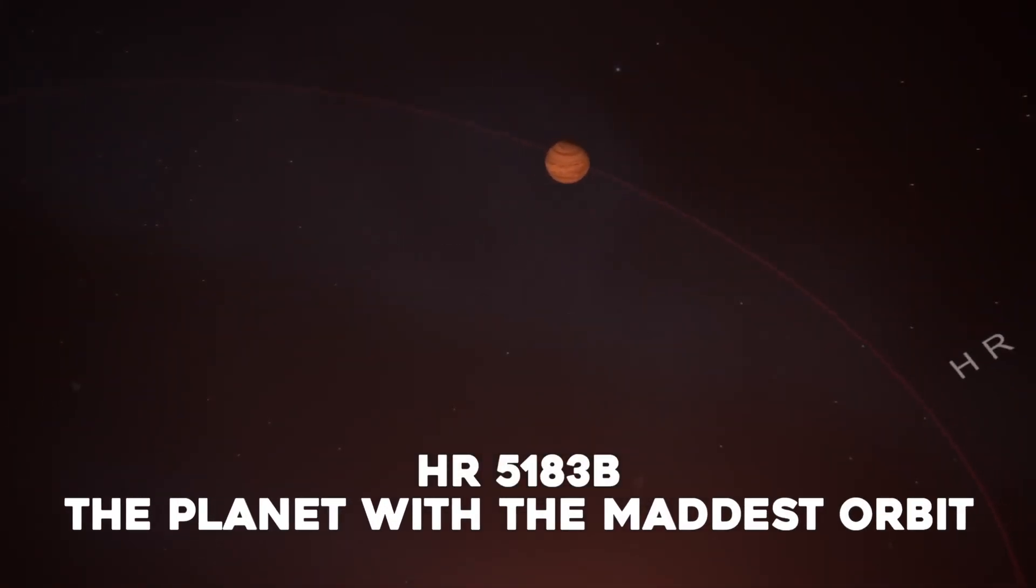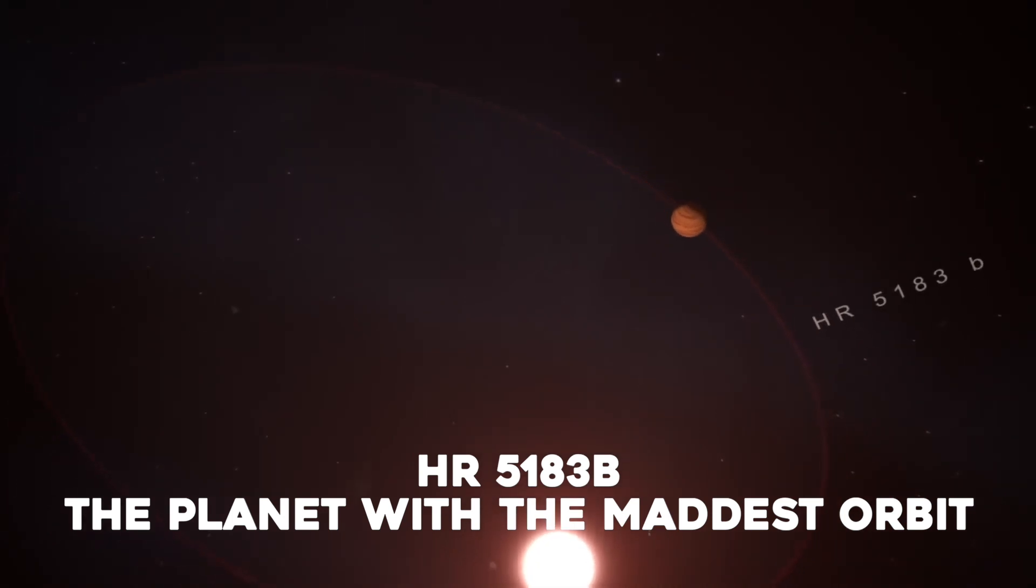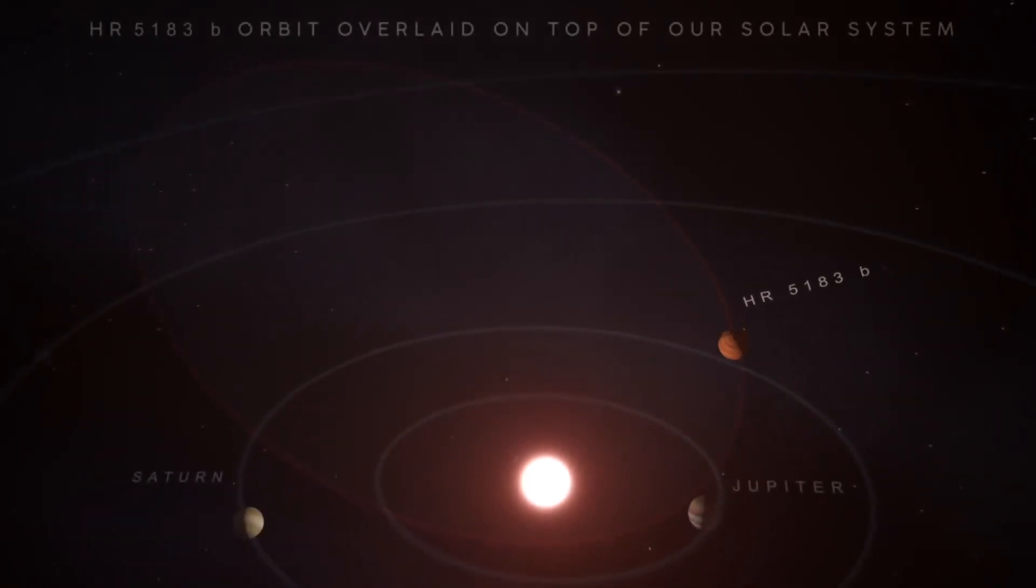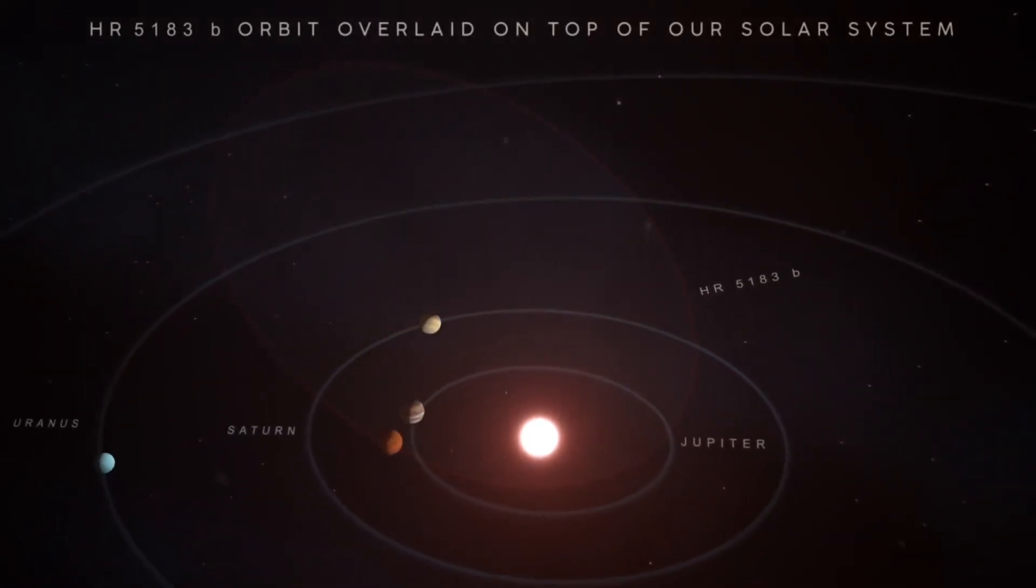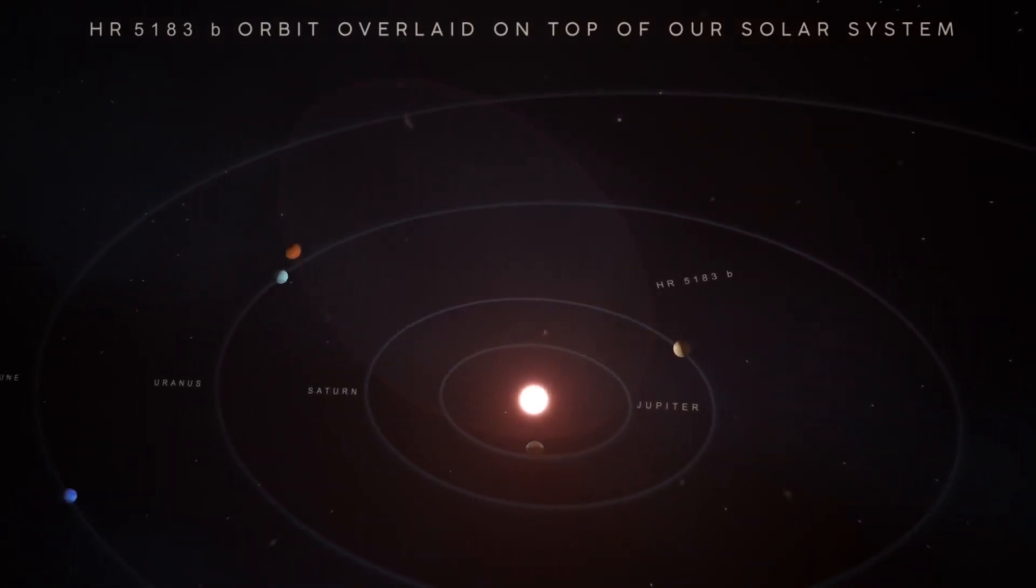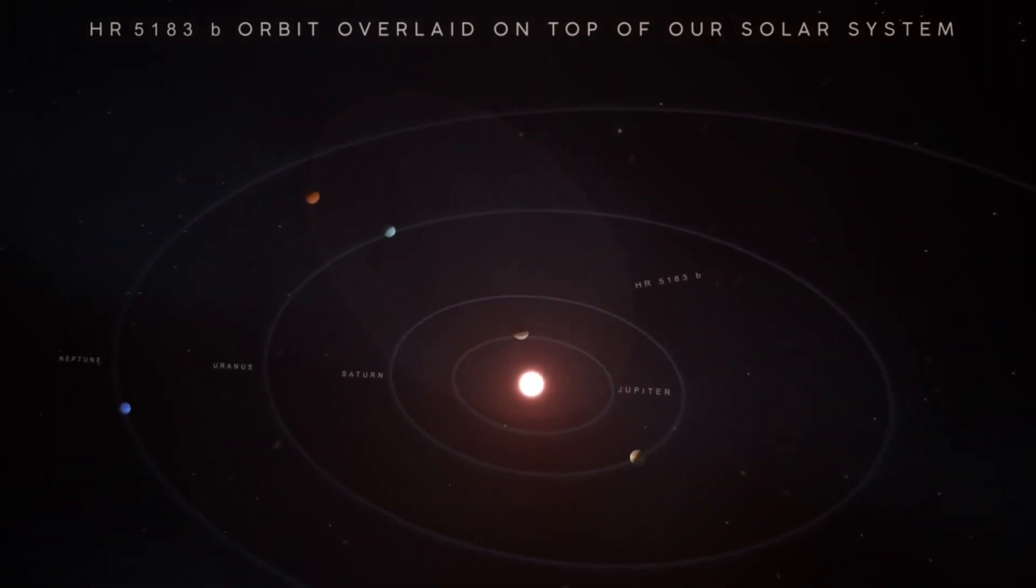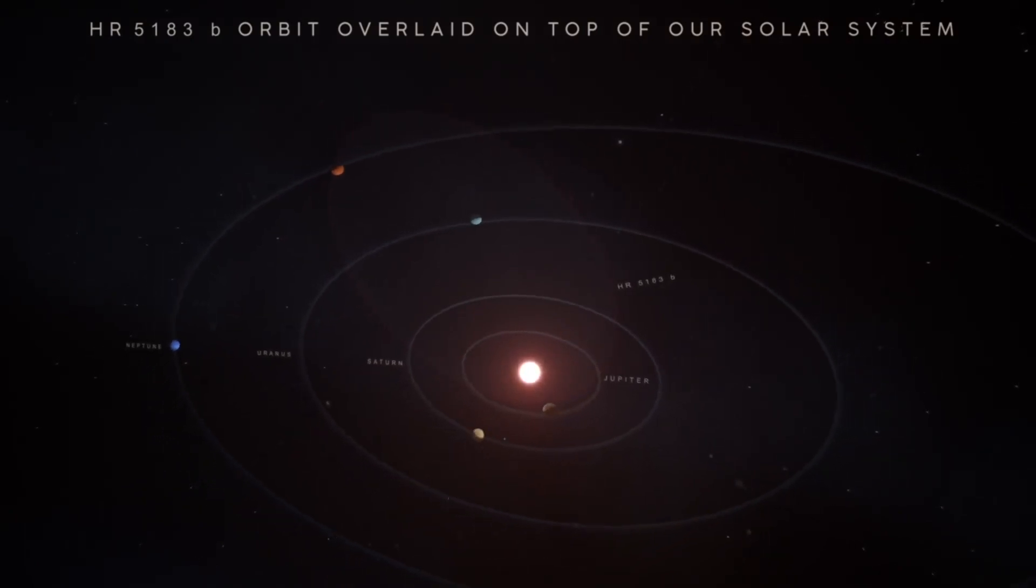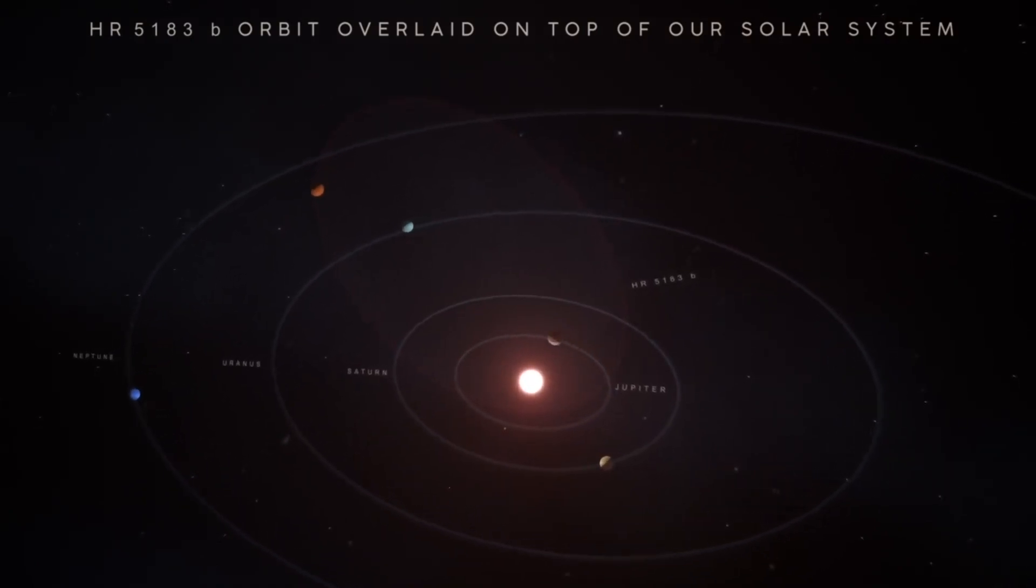HR 5183b – The Planet with the Maddest Orbit. HR 5183b is in no hurry to orbit its star. Discovered in 2019, it's a galumphing giant, three times more massive than our biggest planet, Jupiter.